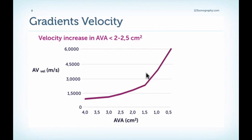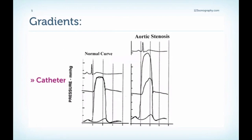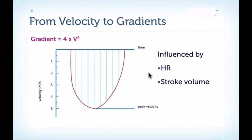In the cath lab we can directly measure the pressures in the left ventricle and in the aorta, either simultaneously or by the pullback method of the catheter. The peak-to-peak gradient frequently measured in the cath lab is not a physiological measurement — it does not represent the actual pressures of the left ventricle and aorta at the same time. It is usually lower than the maximum or peak instantaneous gradient measured by Doppler echo. We can also calculate a mean gradient in the cath lab.